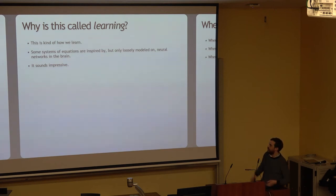So why is this called learning, but why not machine doing or machine stuff? This is kind of how we learn, kind of. Some systems of equations, like the one in the previous slide, are inspired by but only loosely modeled on neural networks in the brain. It's more poetic than anything else. And the other one, this is my bit, it sounds impressive. There's this great quote that I learned, that machine learning is done with Python and artificial intelligence is done with PowerPoint. At some point in my late 20s, early 30s, computer programming and programmers in general and nerds got sexy. For 30 years, we were totally geeks, but somebody got interested in us. It sounds impressive to call it machine learning.